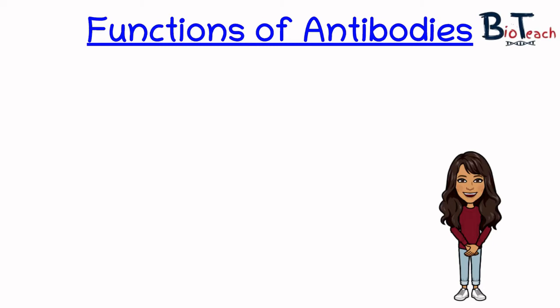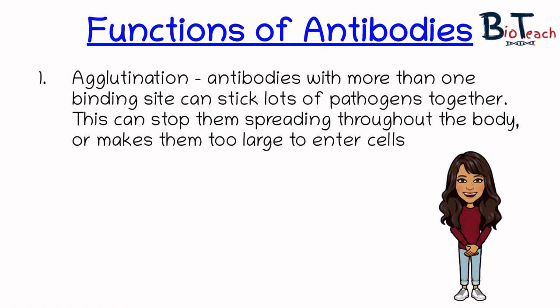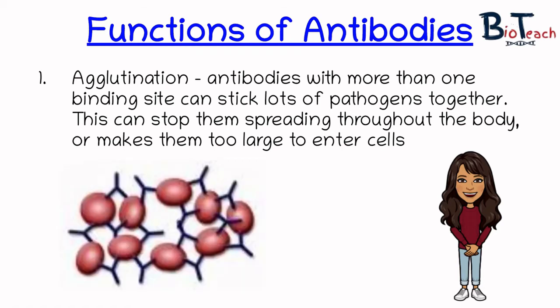This part of the video covers how antibodies work to stop antigens or pathogens. Antibodies work in different ways. The first is agglutination, where antibodies stick lots of pathogens together to stop them spreading throughout the body. Each antibody has two binding sites so they can bind to the same antigen more than once, causing them to clump together — as shown in the diagram where the red blobs are antigens and the Y-shapes are antibodies binding to multiple antigens.